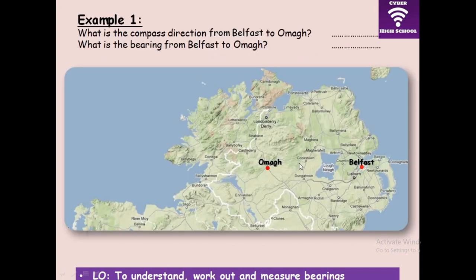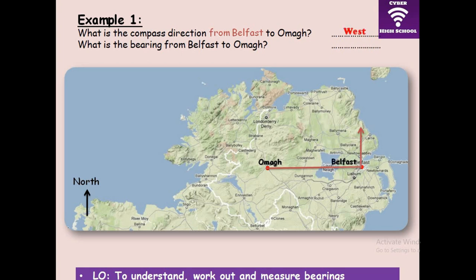Let's look at our first example. The first thing you must understand is there is always a north direction indicated on every map. What is the compass direction from Belfast to OMAG? The keyword here is 'from Belfast' — so you locate yourself at Belfast, then draw a line connecting the two places. From Belfast to OMAG, you need to know where your north is. The compass direction is west.